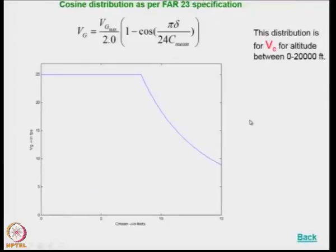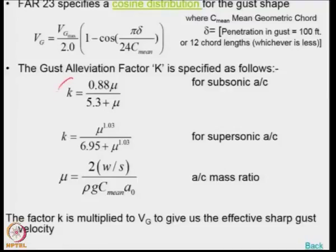For example, there is a formula for a cosine distribution. For cruise velocities between 0 to 20,000 feet, this particular formula is to be used to look at the variation of the gust speed. There is something called a gust elevation factor. That gust elevation factor k takes care of the fact that gusts are usually not sharp and will be increasing slowly from 0 value to the maximum value. This factor k is multiplied by the gust velocity to achieve the effective sharp gust velocity. There is a separate formula for subsonic flight and a different formula for supersonic flight.